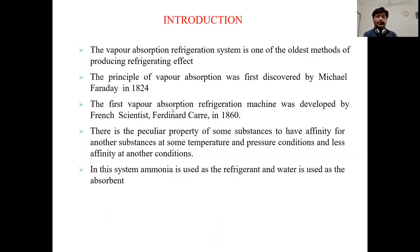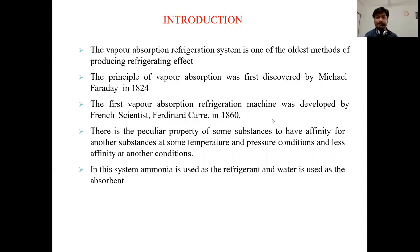The Vapor Absorption Refrigeration System is one of the oldest methods of producing a refrigeration effect. It is not used nowadays because its COP is very low. That's why it is an old method — today we use the VCRS cycle. The principle of vapor absorption was first discovered by Michael Faraday in 1821.